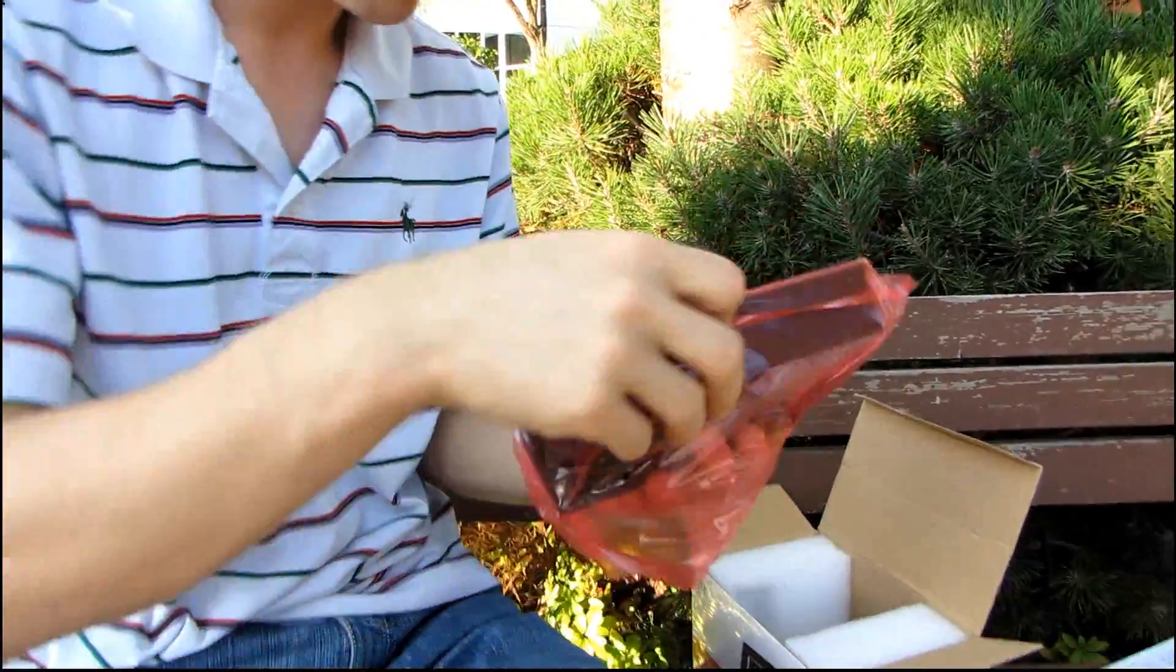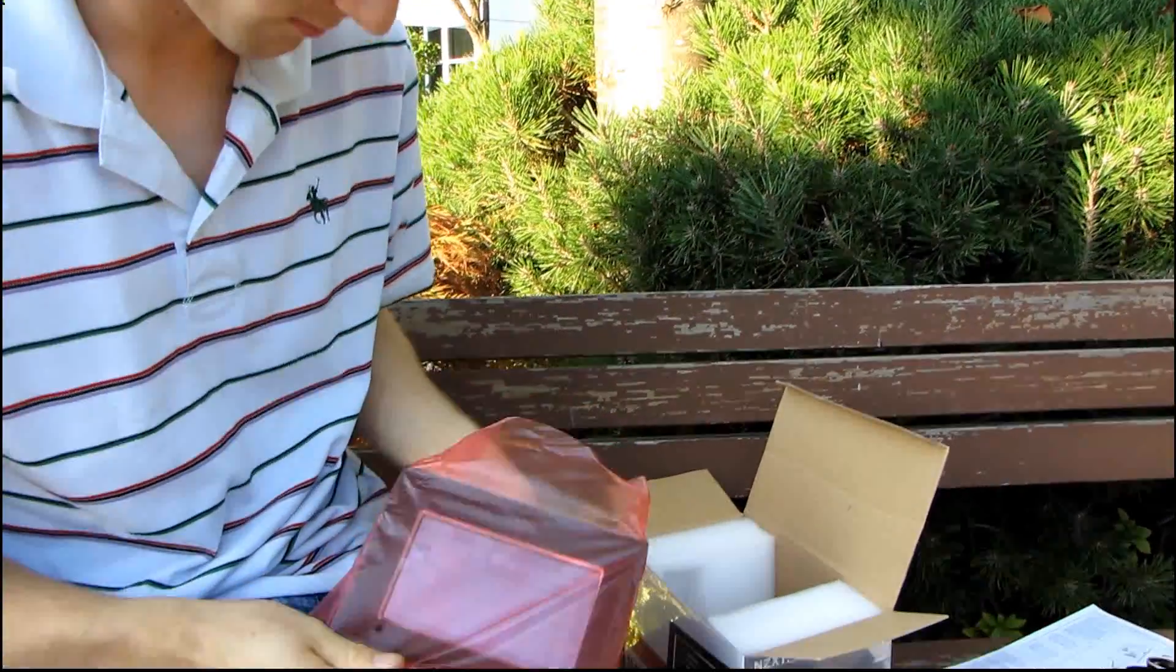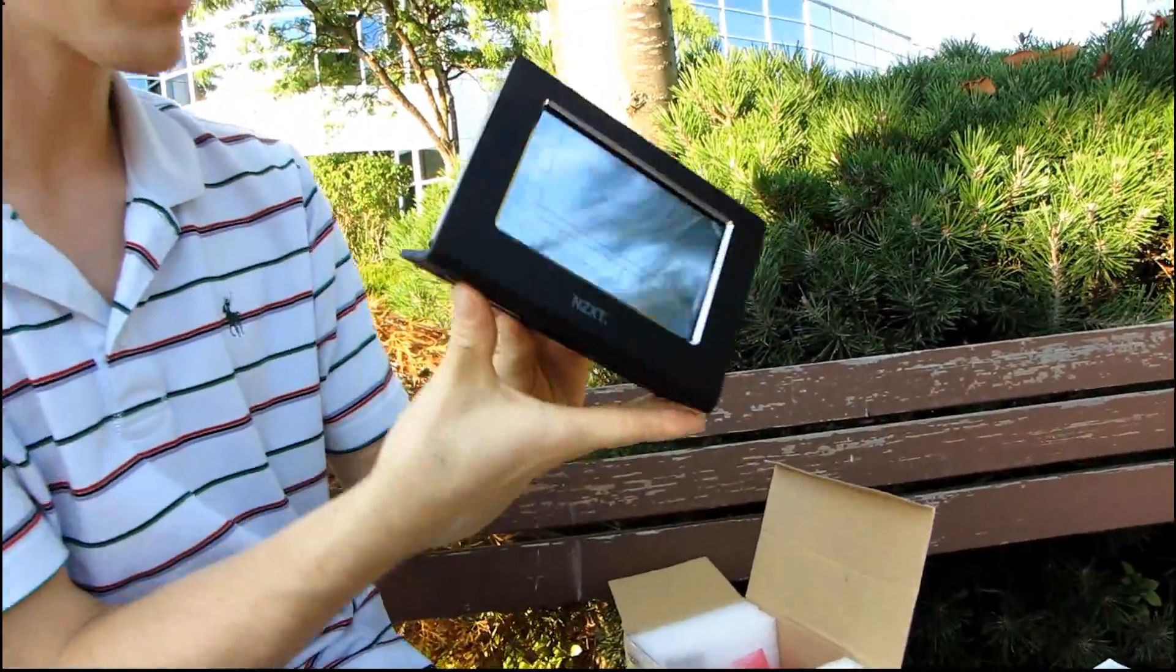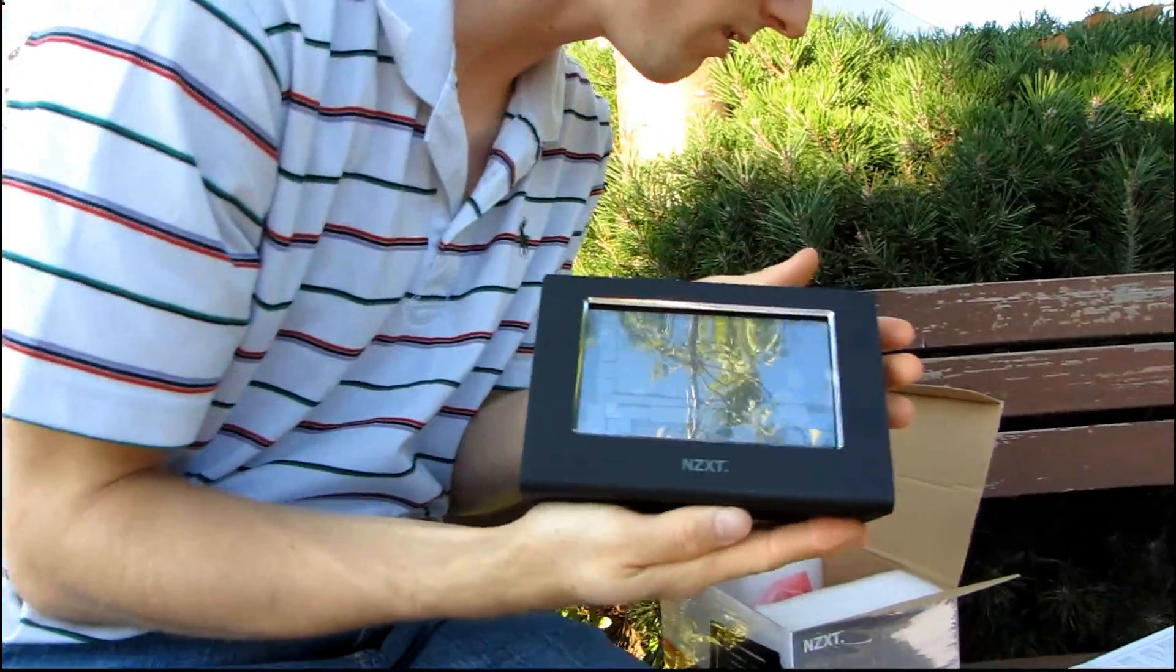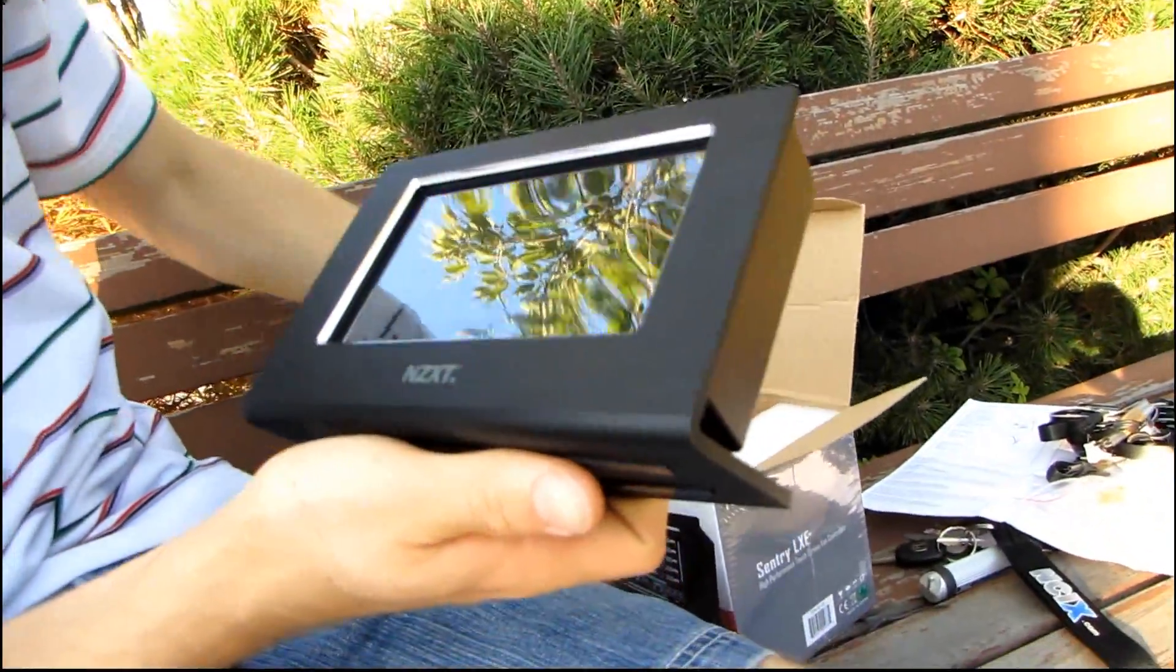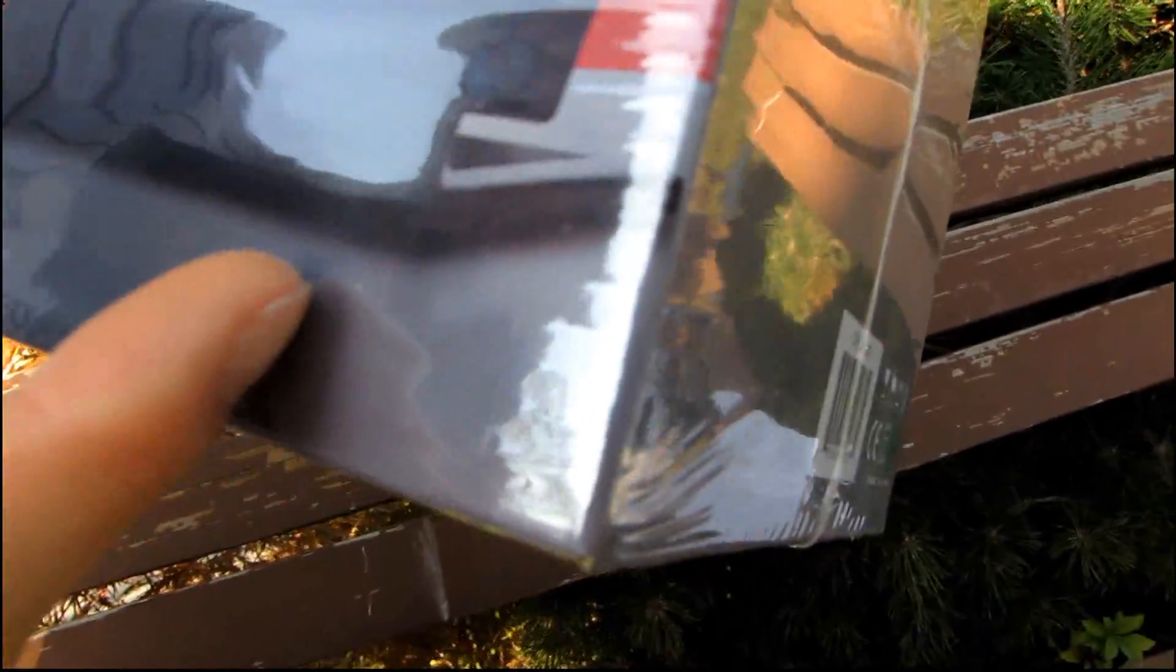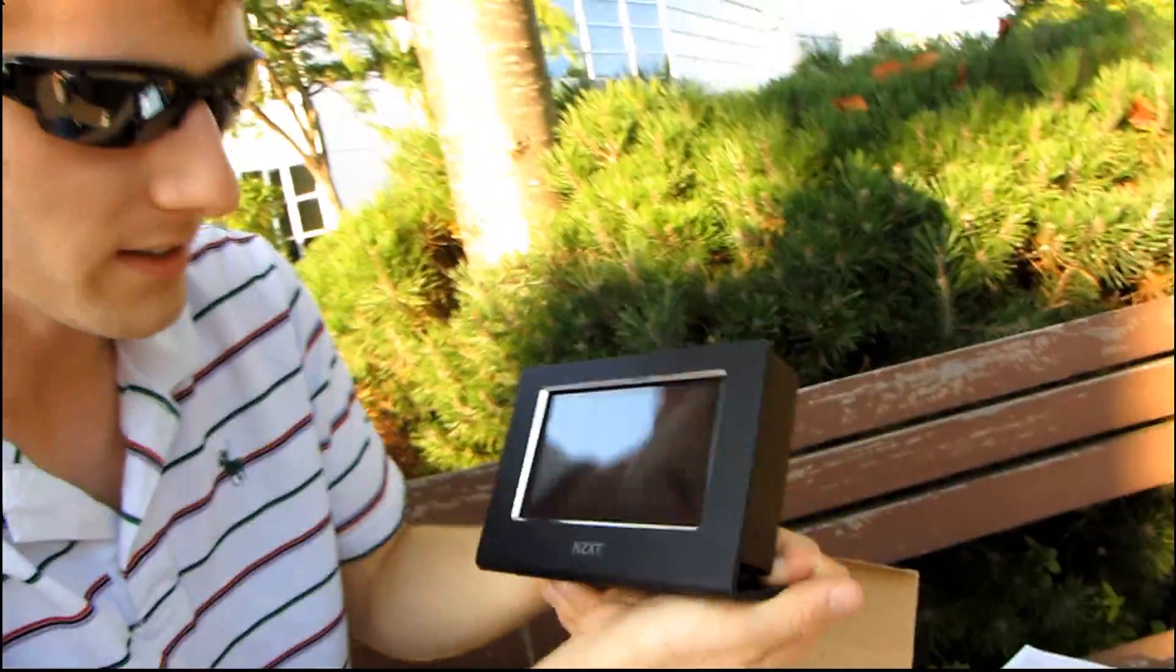So you got a couple of different mounting options for this guy, I think, maybe you don't, I'll open it up and find out. Oh this is interesting, what I was expecting was for this to be a dual 5 and a quarter inch bay fan speed controller, but what it actually is, and I guess I should have known this, you can see the stand right there on the box, I mean it should be pretty obvious. But this actually sits on your desk and it looks quite nice.